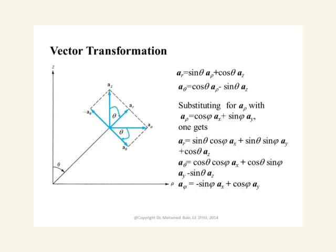I'm drawing here what we call the Rho z-plane. If this is a point B here, this is its position vector, and this is the plane containing the position vector and the z-axis. The coordinate here is simply equal to Rho, pointing in the Rho direction. We agreed that the angle theta is the angle that the position vector makes with the z-axis, so we call this one theta.